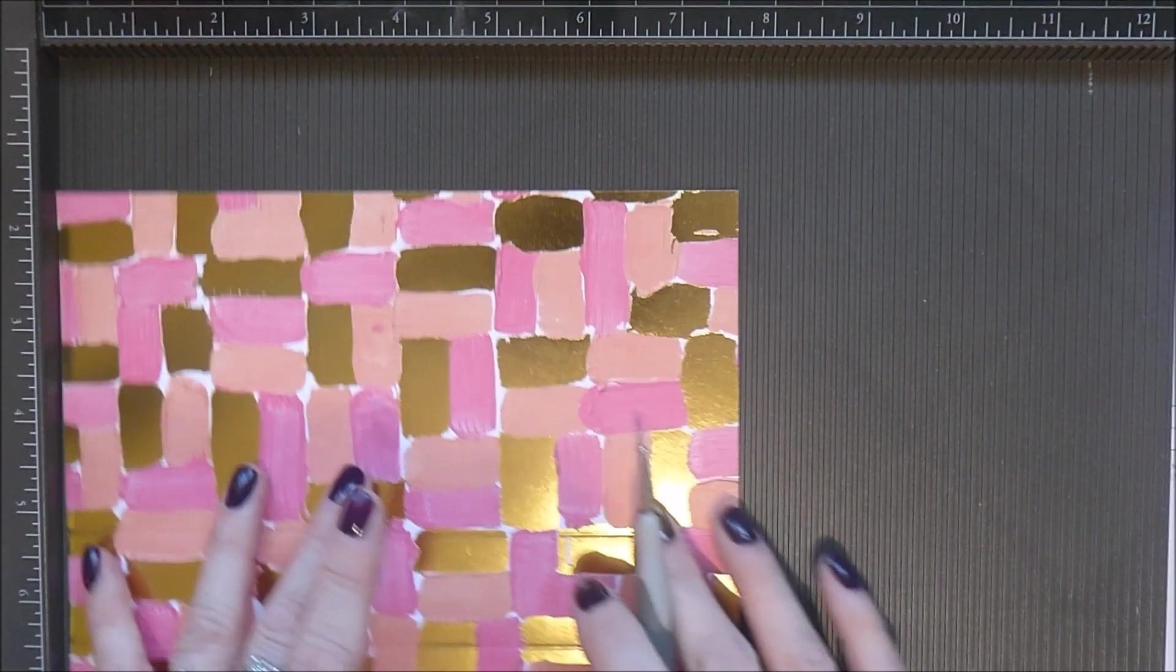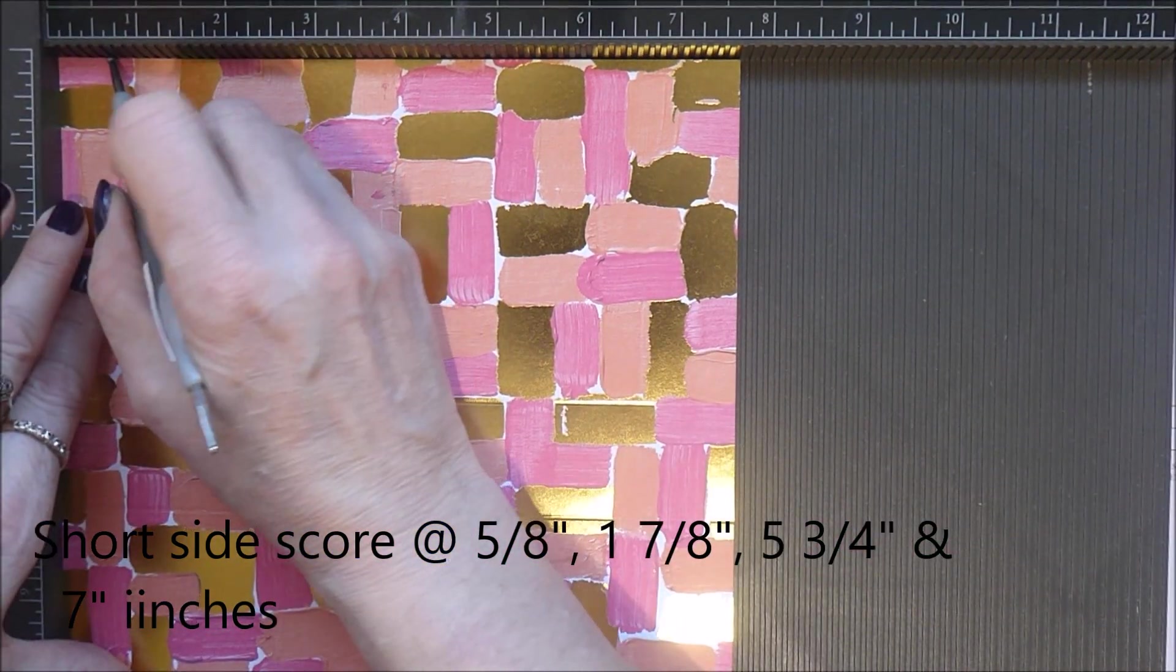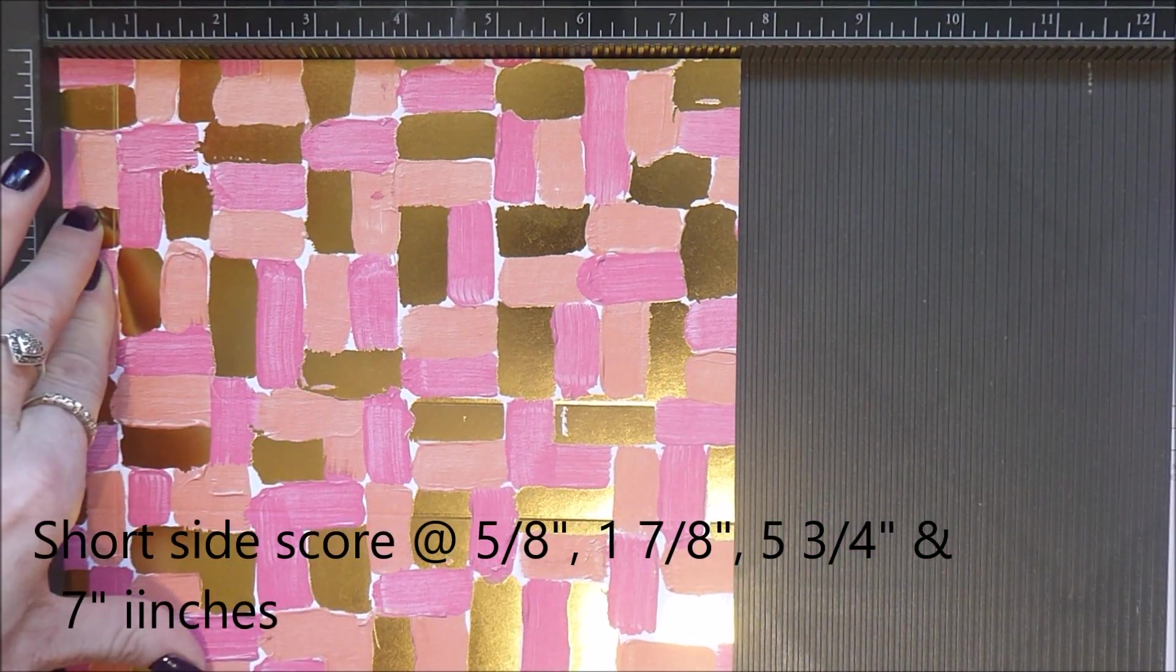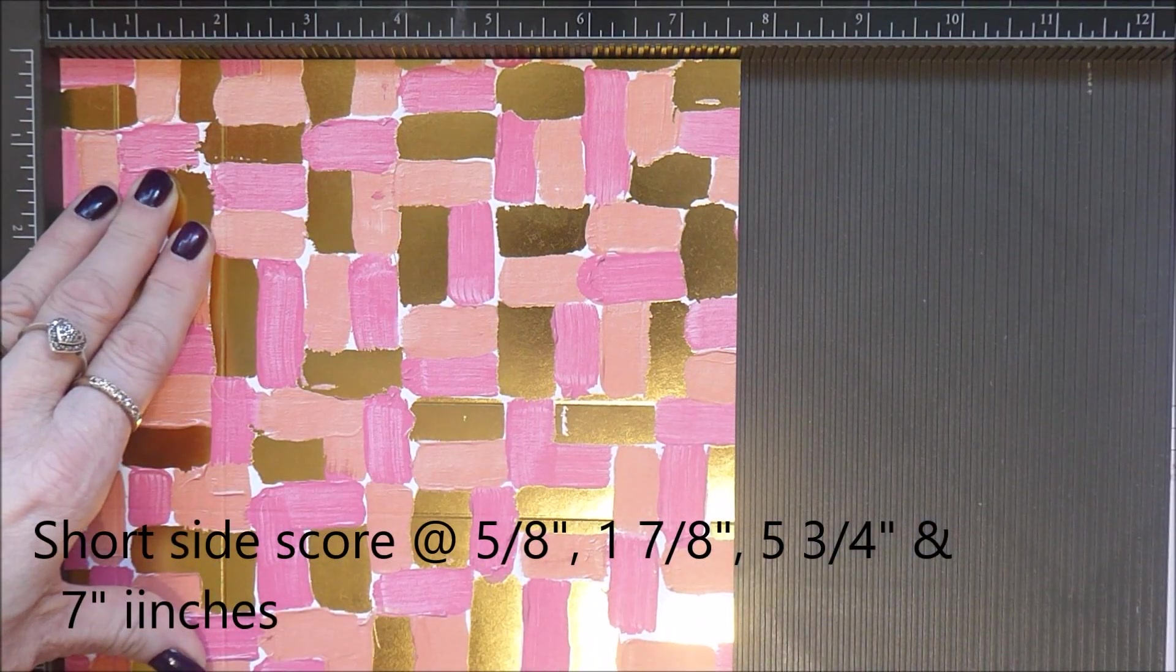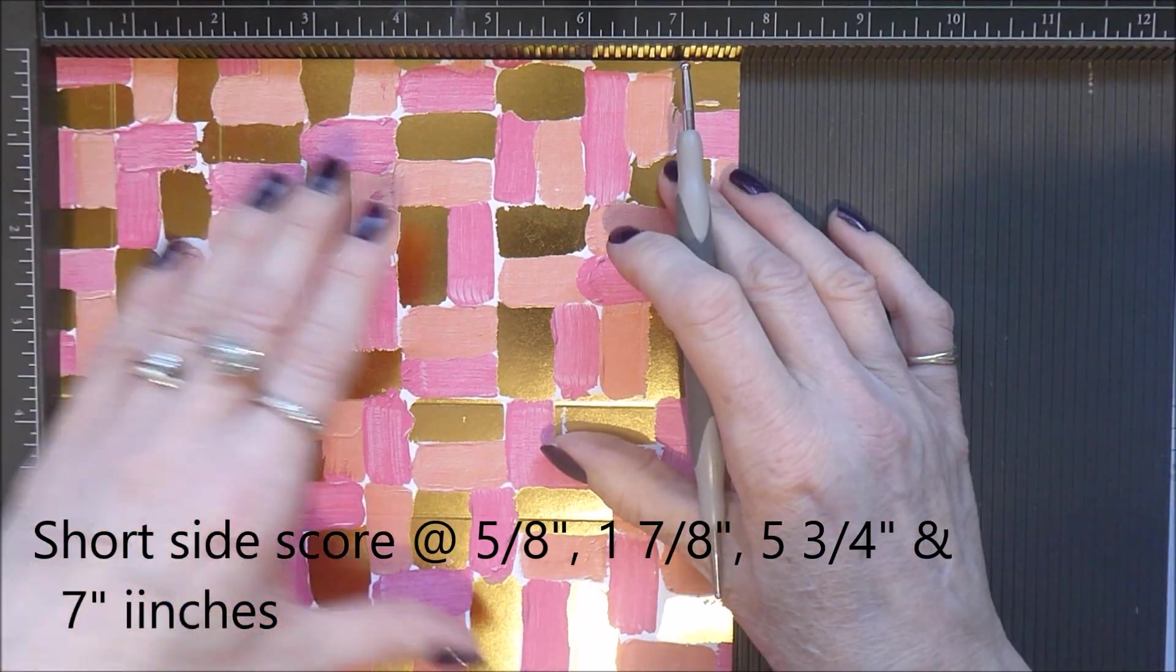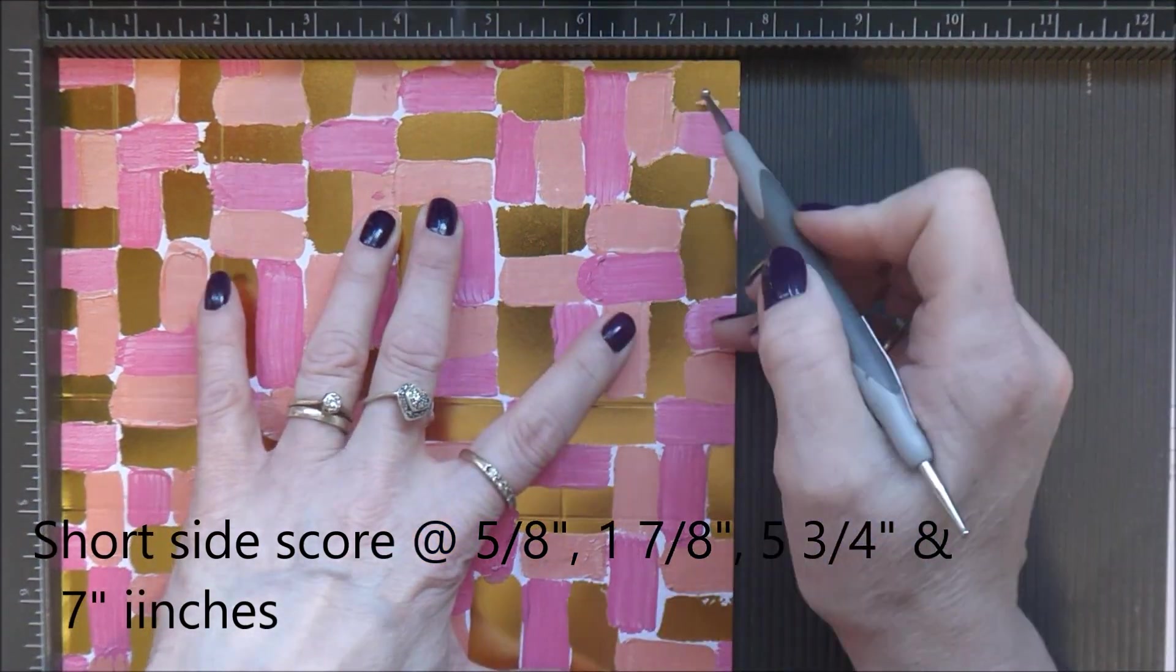And then turning it on its side. On the short side you're scoring at five eighths of an inch. Then you're scoring at one and seven eighths of an inch. Then at five and three quarters. And at seven.